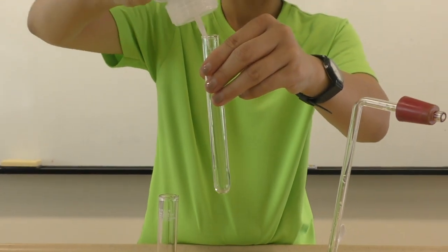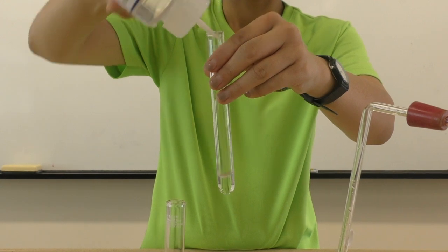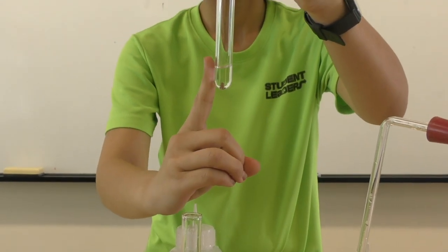Add about 2 cm depth of sulfuric acid into one of the test tubes. Use your index finger to estimate 2 cm.